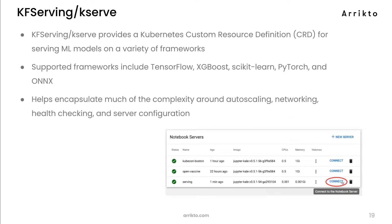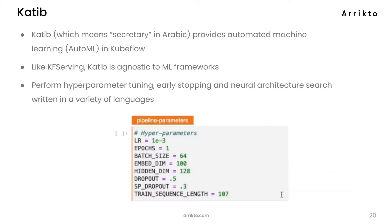The fourth component is KF Serving, now known as KServe. It provides a Kubernetes CRD for serving models on a variety of frameworks including TensorFlow, PyTorch, and others. It helps encapsulate a lot of the complexity around auto-scaling, networking, and server configuration.